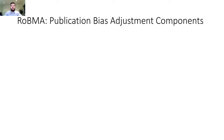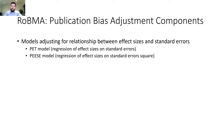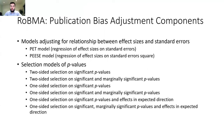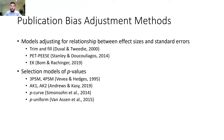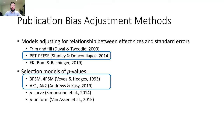Looking across all the different publication bias adjustment methods specified in RoBMA, we use the PET and PEESE publication adjustment models to adjust for the relationship between effect size and standard errors, and we specify six different weight functions that capture different assumptions about how publication bias might operate on p-values. All of those specifications cover approximately the PET-PEESE, 3PSM, 4PSM, AK1, and AK2 models.